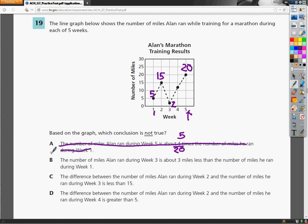Now B says the number of miles Alan ran during week 3, which is about 2, is about 3 miles less than the number he ran on week 1. Well, on week 1, he ran 5, and so I'm going to do 3 less. So I do 5 minus 3, and it gives me 2, which is exactly what I would expect it to be. So I'm going to put a mark through B, but not all the way through because maybe I picked the wrong number.